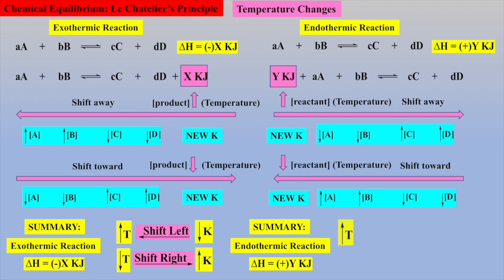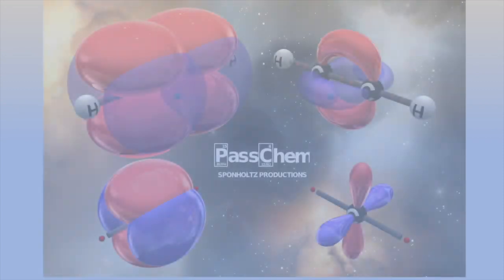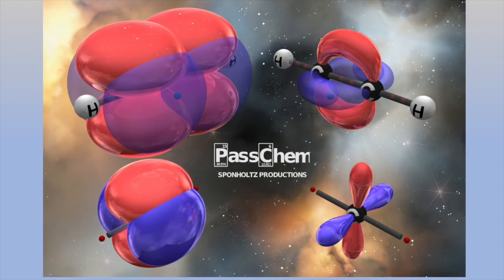Thus, for an endothermic reaction: if temperature is increased, there will be a shift to the right and a new larger equilibrium constant will be obtained; if temperature is decreased, there will be a shift to the left and a new smaller equilibrium constant will be obtained.